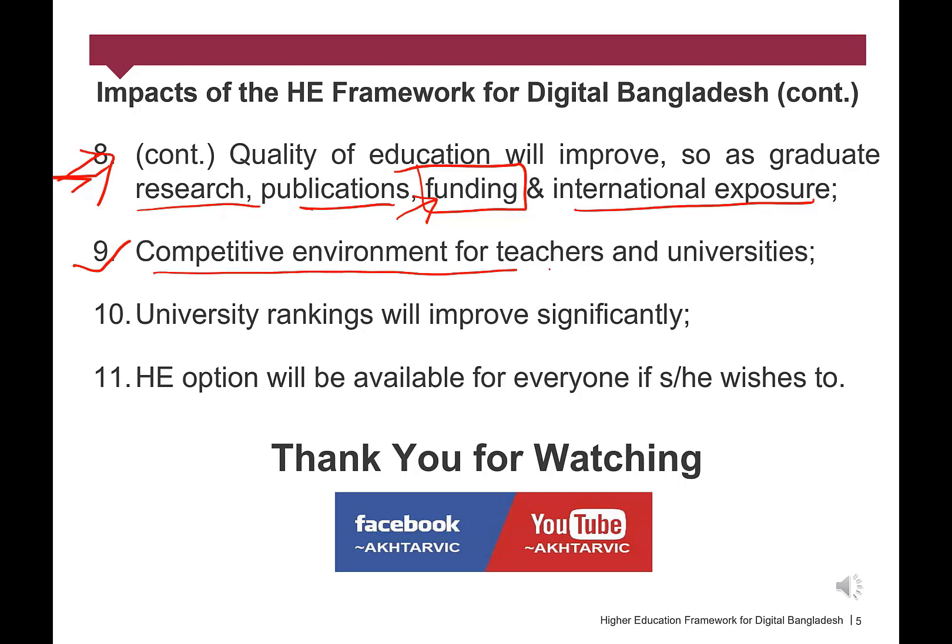Number 9: Competitive Environment for Teachers and Universities. Not all universities should provide courses and programs to international students. The universities should meet certain standards as providers to offer international programs. There should be a national ranking system of universities following the same pattern of Times Higher Education ranking. Thus, a competitive but congenial academic atmosphere will be created for both teachers and universities. Criteria for academic promotion and annual increments — such as academic excellence, professional development, quality publications and research grants — need to be strengthened and followed in a systematic way with transparency.